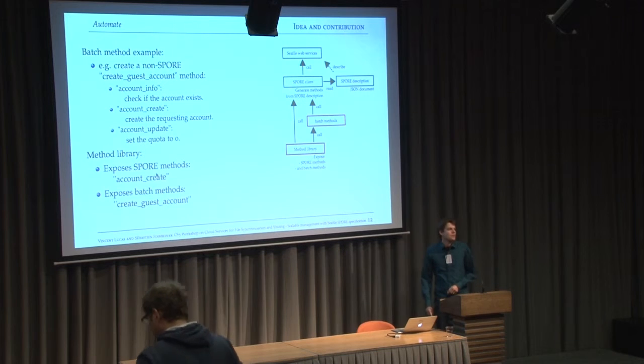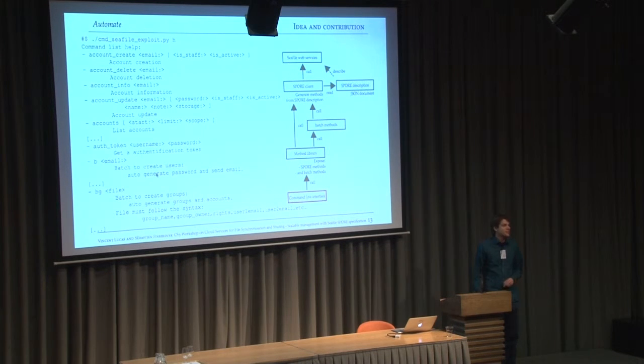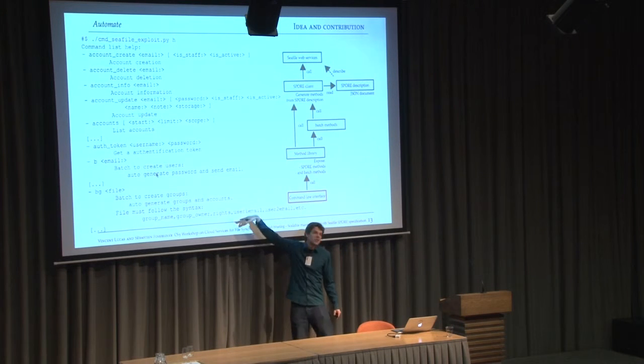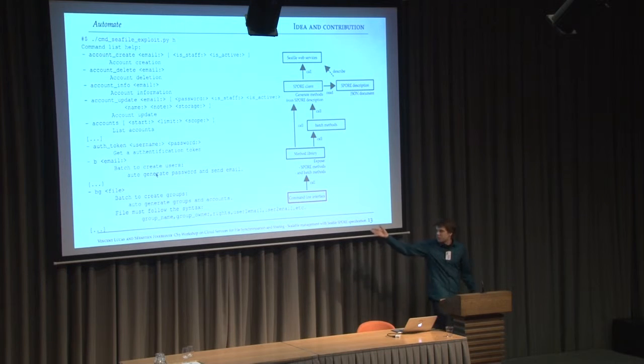At this point, every administrator wants one thing, the command line interface. So just an example of the help when you use it. It only takes the description files and the batch methods and generates automatically all the methods you can have. So when you add a description in the description file, it creates a command line method. So you can call it. The example: the first one is really the Seafile methods, which are described in the SPORE descriptions. And the two last ones are batch methods for creating a guest account. And the really last one takes a file, creates a group, sets an owner, sets members of the group, creates a repository, shares the repository with the group, and so on. So you can do things.